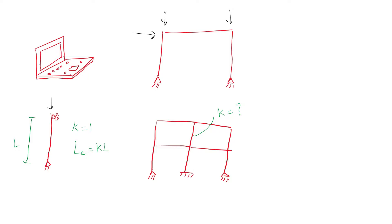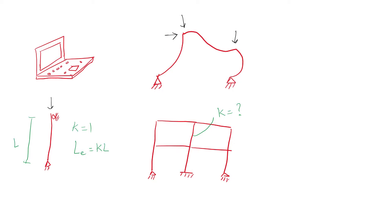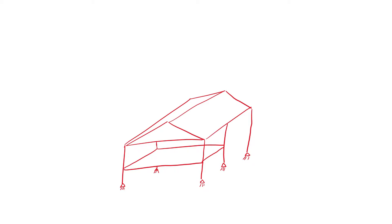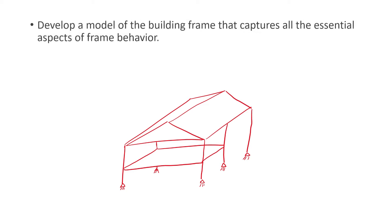The direct analysis method develops a stability design approach that applies in the same logical and consistent way to all types of structures, including braced frames, moment frames, and combined framing systems. In this video, we will show a step-by-step procedure of how to conduct the direct analysis method to assess the stability of a steel frame, with the first step being to develop a model of the building frame that captures all the essential aspects of frame behavior.